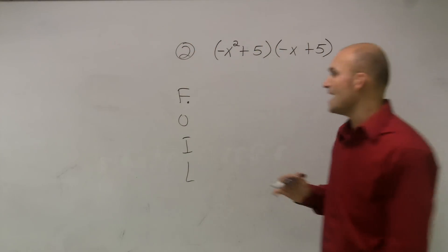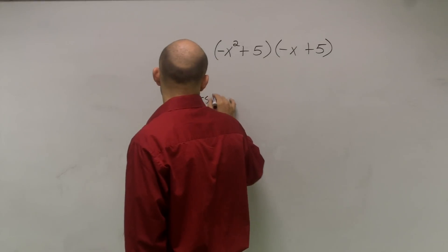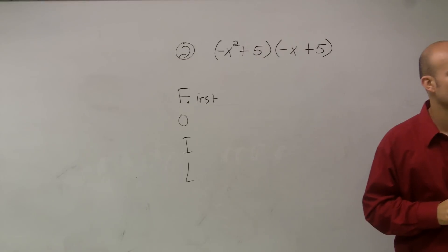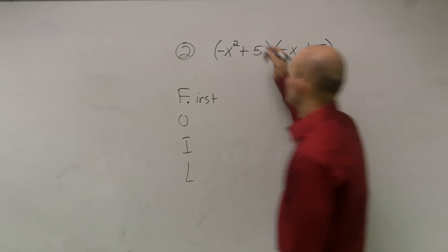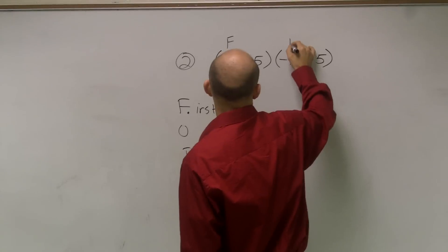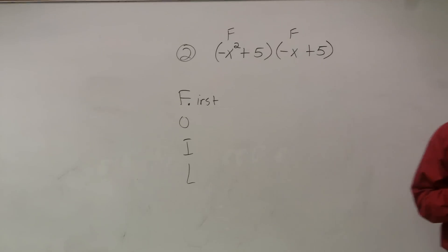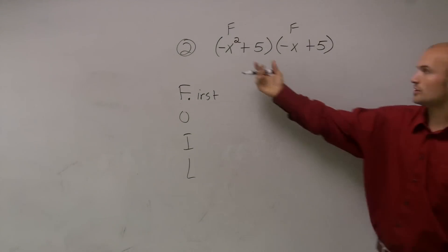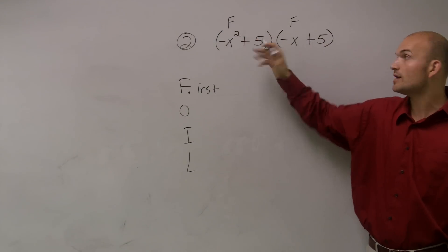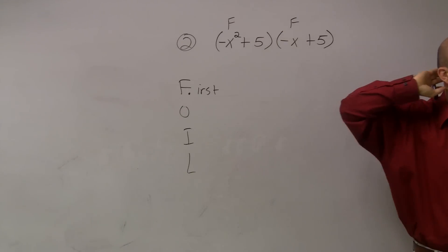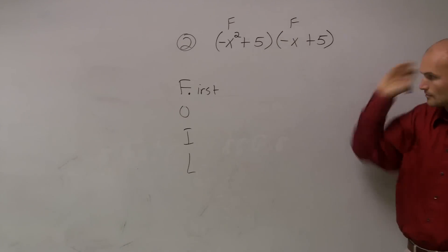So the first one, F, represents first. So what that means is I'm going to multiply the first two terms of each binomial. So what I'm going to do is put a little F in front of or above my two first terms so you guys can understand what are the first terms. If you look at the first binomial, if you were to read from left to right, you'd notice that negative x squared and negative x are the first terms in each binomial.